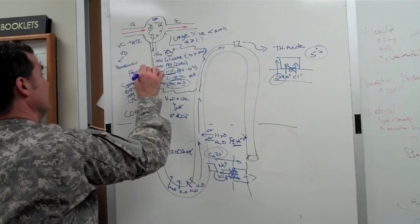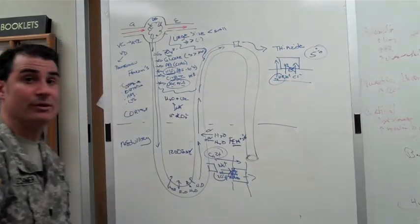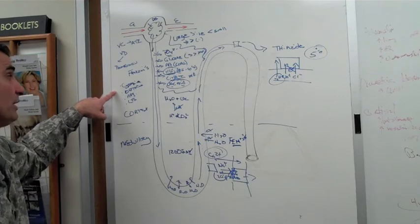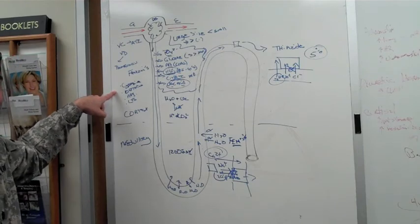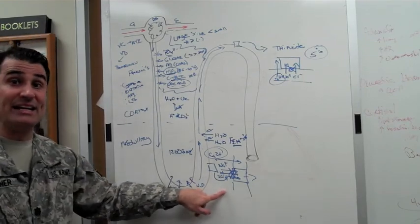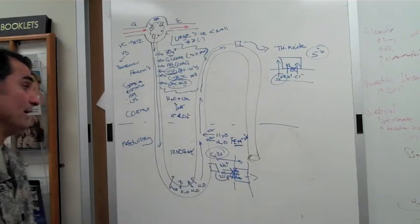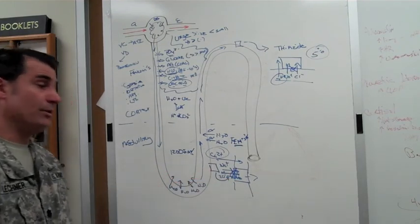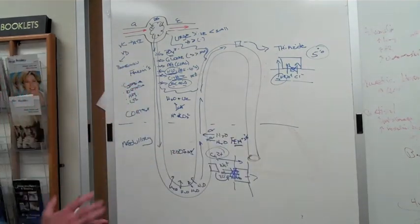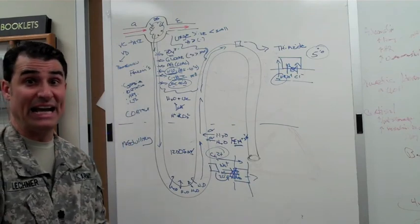Bartter syndrome, Gitelman syndrome, the three diuretics: acetazolamide or Diamox, which is a carbonic anhydrase inhibitor, stinks as a diuretic, good to get rid of bicarbonate. Great diuretic Lasix, fractional excretion is 15%, blocks both your sodium, your potassium, and two chloride. And then the thiazide diuretics in between with 5% being blocked and you excrete your sodium and chloride.